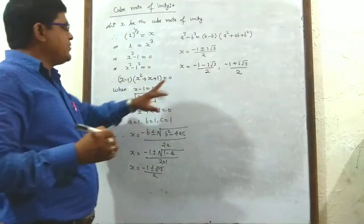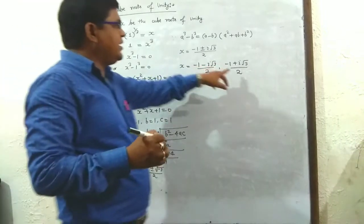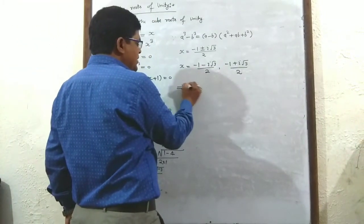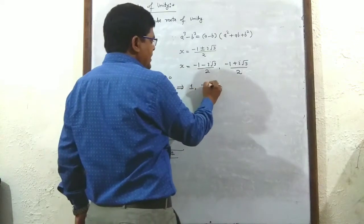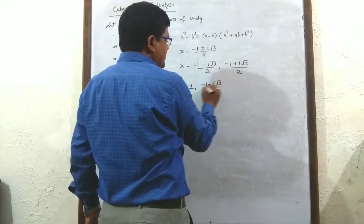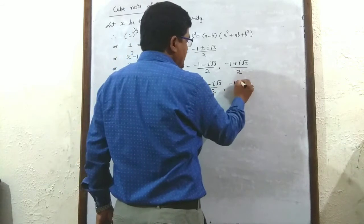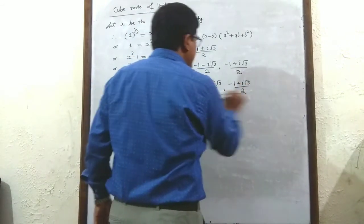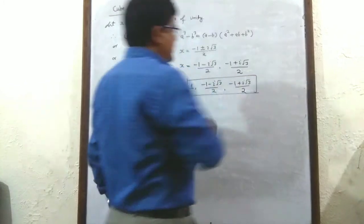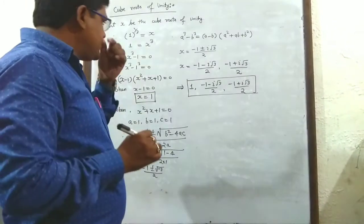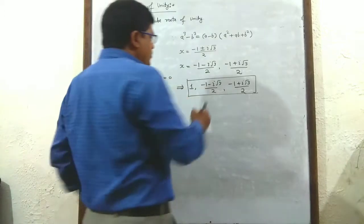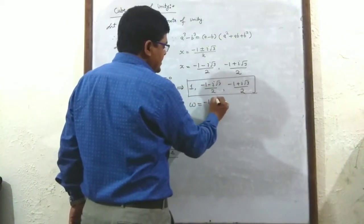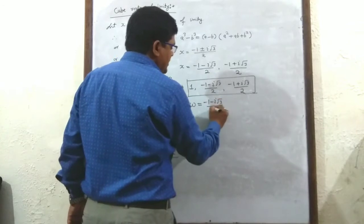The total three cube roots of unity are: 1, (-1 - i√3)/2, and (-1 + i√3)/2. If we suppose omega (ω) equals (-1 - i√3)/2, we give this second cube root unity the name omega.